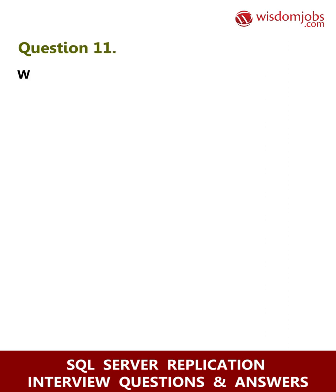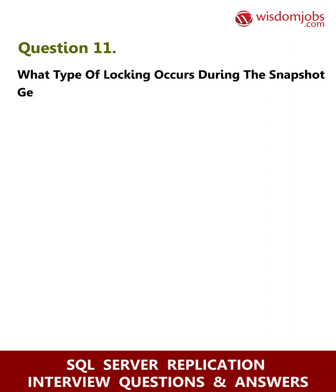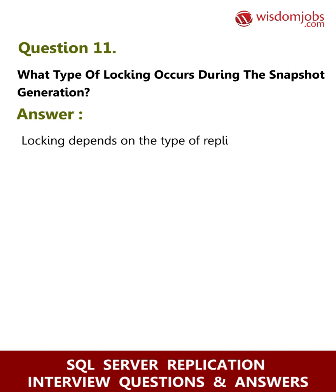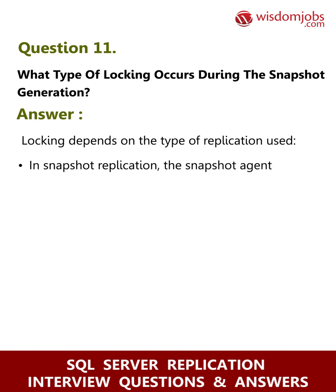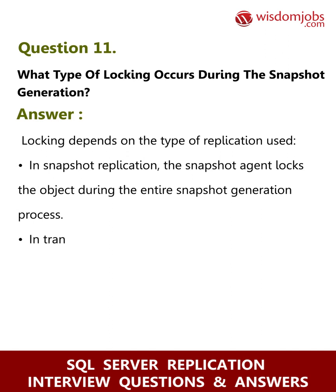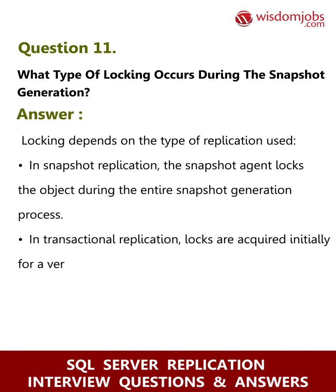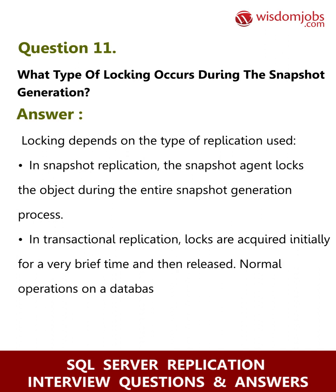Question 11: What type of locking occurs during the snapshot generation? Answer: Locking depends on the type of replication used. In snapshot replication, the snapshot agent locks the object during the entire snapshot generation process. In transactional replication, locks are acquired initially for a very brief time and then released, and normal operations on the database can continue after that.